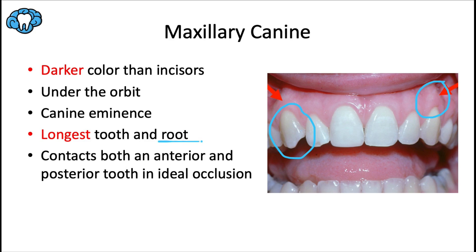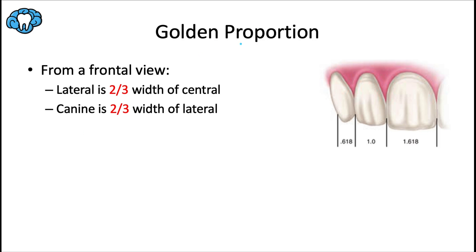Having such a strong root provides excellent anchorage for orthodontic movement or supporting a bridge or partial denture. It's also the least likely tooth to be lost or extracted due to periodontal or alveolar bone loss. It's also the only tooth that has the potential of contacting both an anterior and a posterior tooth in ideal occlusion — those teeth being the mandibular canine and the mandibular first premolar.